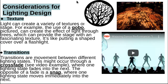Texture and transitions: light can create a variety of textures on stage. For example, the use of a gobo — pictured as this circular thing — can create the effect of light through trees, providing the stage with a fascinating texture. It's like putting a shaped cover over a flashlight to change the shape of the light as it comes out of the lighting instrument.